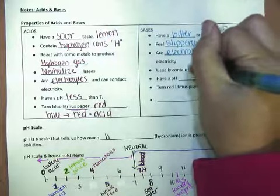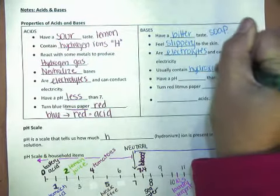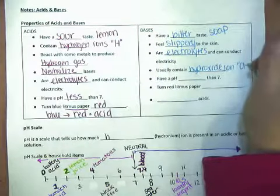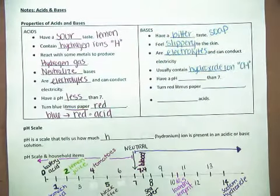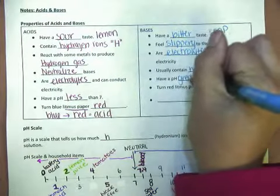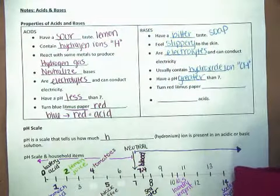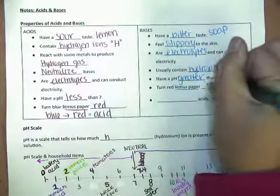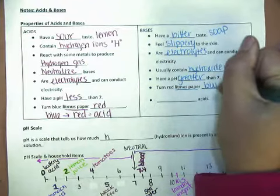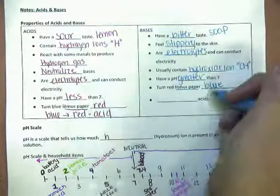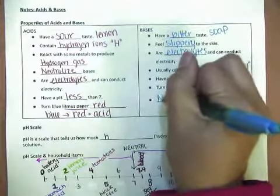Bases contain hydroxide ions, which is OH. So they usually end in OH. They have a pH greater than 7. Litmus paper is used to test for bases. They turn red litmus paper blue. And just like acids neutralize bases, bases neutralize acids.